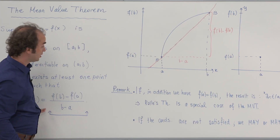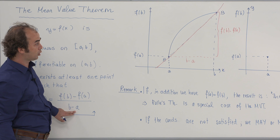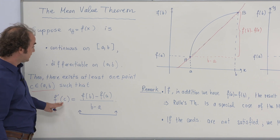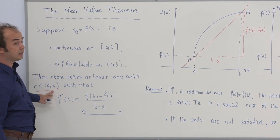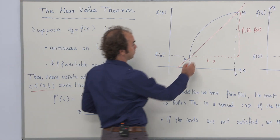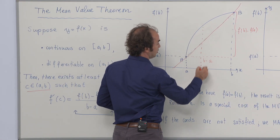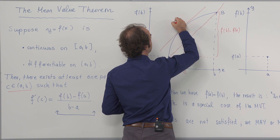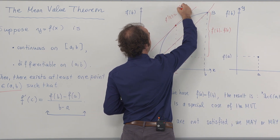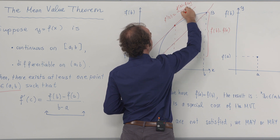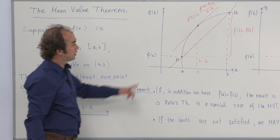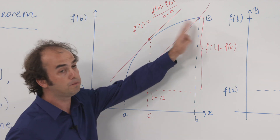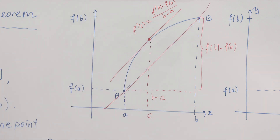Therefore, the theorem says that if the conditions are satisfied, then in the interior of the domain of f there is a point c for which the derivative of f at that point equals f(b) minus f(a) divided by b minus a. In geometrical terms, the slope of the tangent line at c equals the slope of the secant line joining the endpoints a and b. This is the geometrical interpretation.